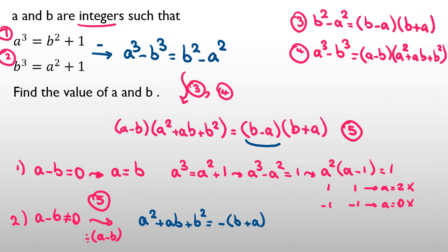As homework, try to solve: A to the fourth equals B squared plus 1, and B to the fourth equals A squared plus 1, where A and B are integers. Comment your answers below this video. Please don't forget to subscribe, turn on the bell, and like the video. Thank you.